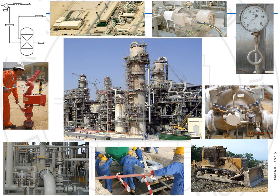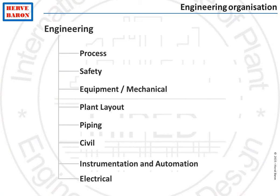Engineering is organized in disciplines. The traditional disciplines are: process, which comes first; safety; equipment mechanical, in charge of machinery of any type — pressure vessels, heat exchangers, rotating equipment, fired equipment such as boilers and turbines; plant layout; piping; instrumentation and control; and electrical.